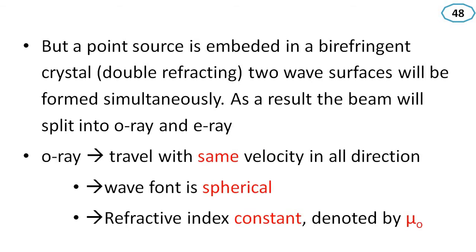The ordinary ray travels with the same velocity in all directions. Since velocity is constant in all directions, the wavefront will be spherical, and the refractive index will be constant for the O-ray. That refractive index is denoted by mu-O, the refractive index for the ordinary ray.